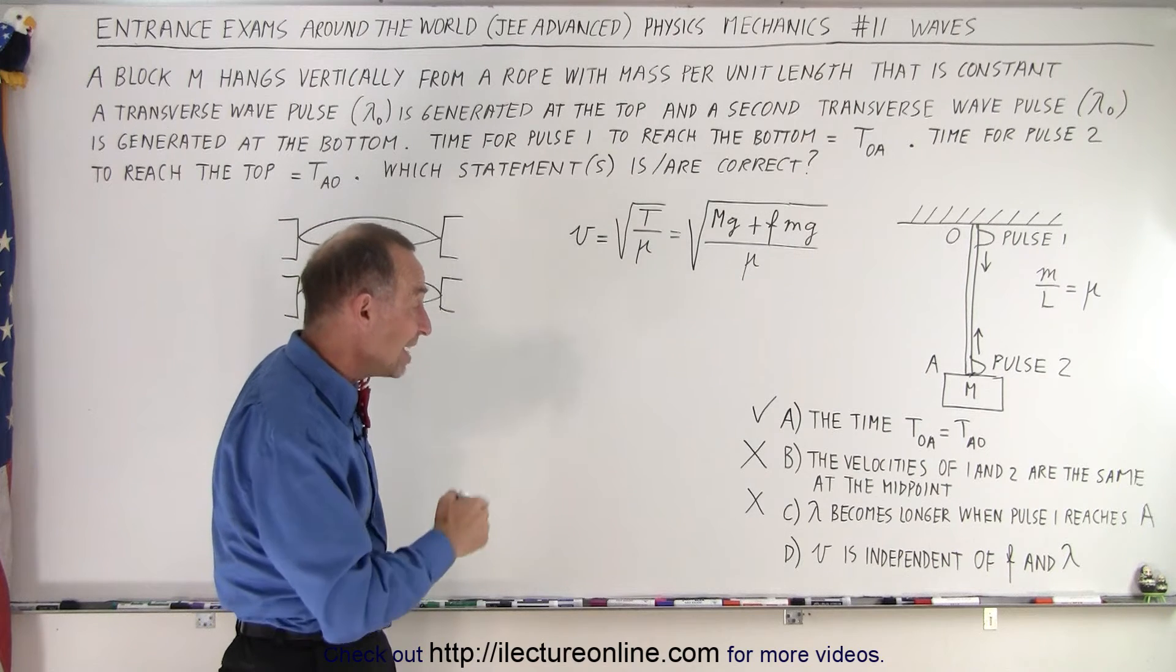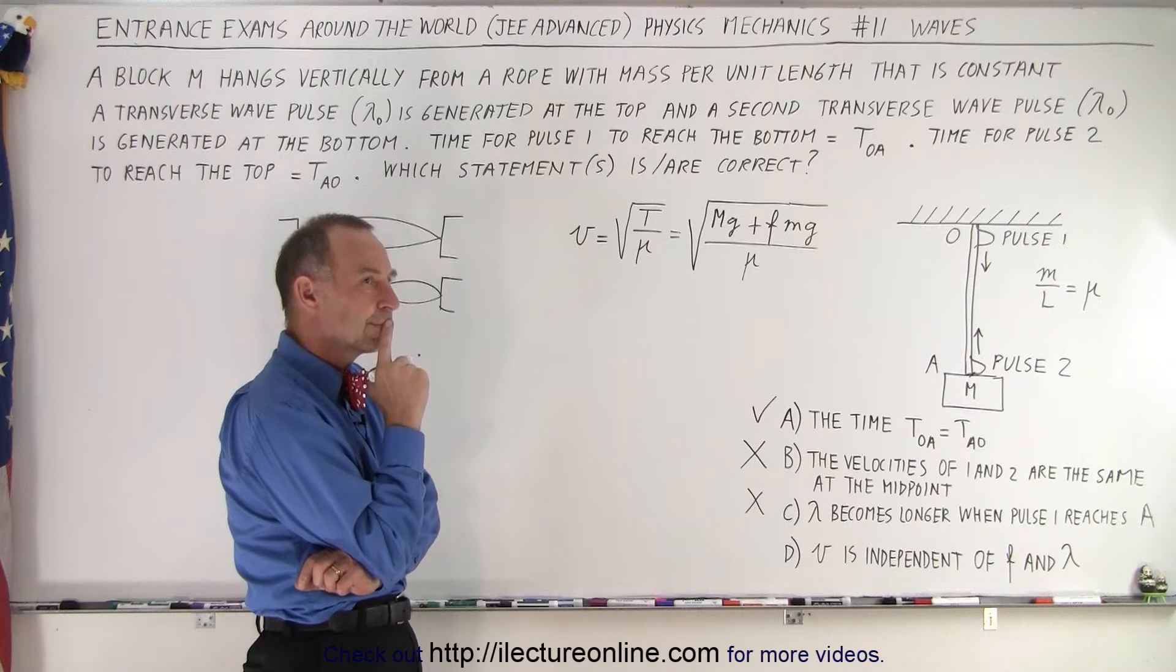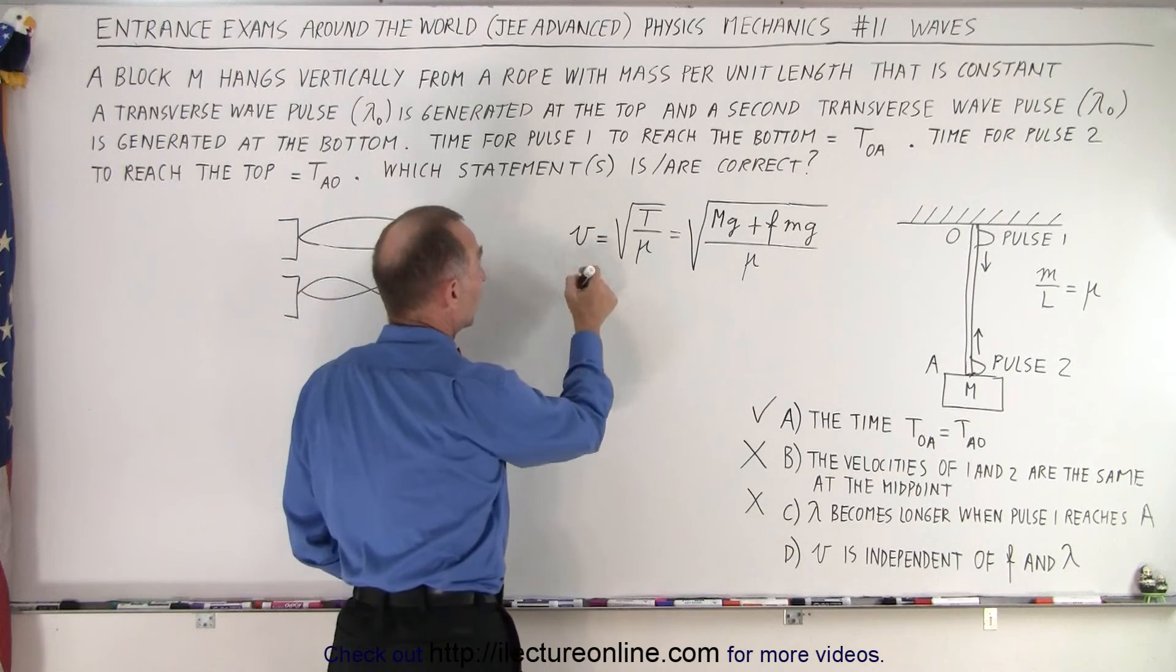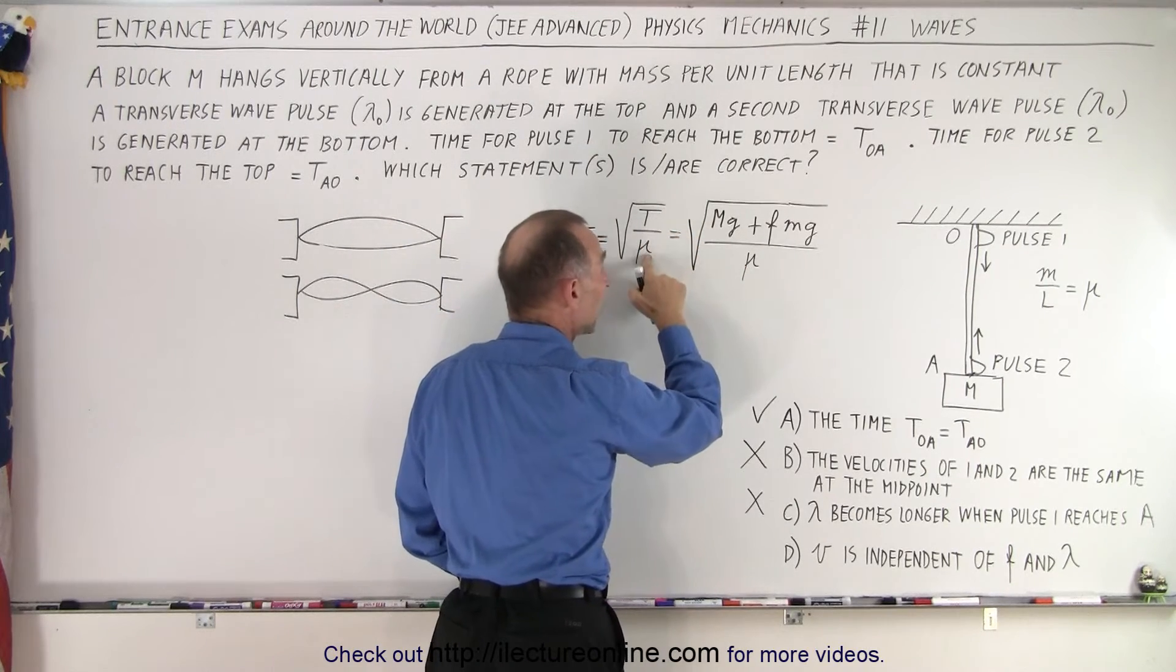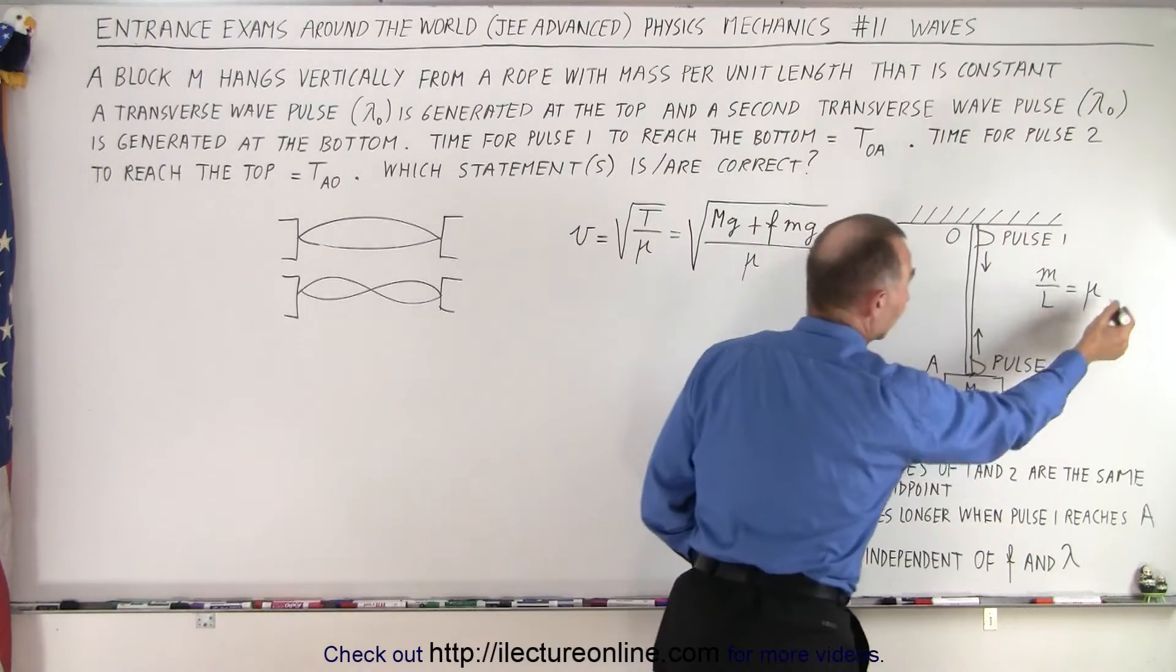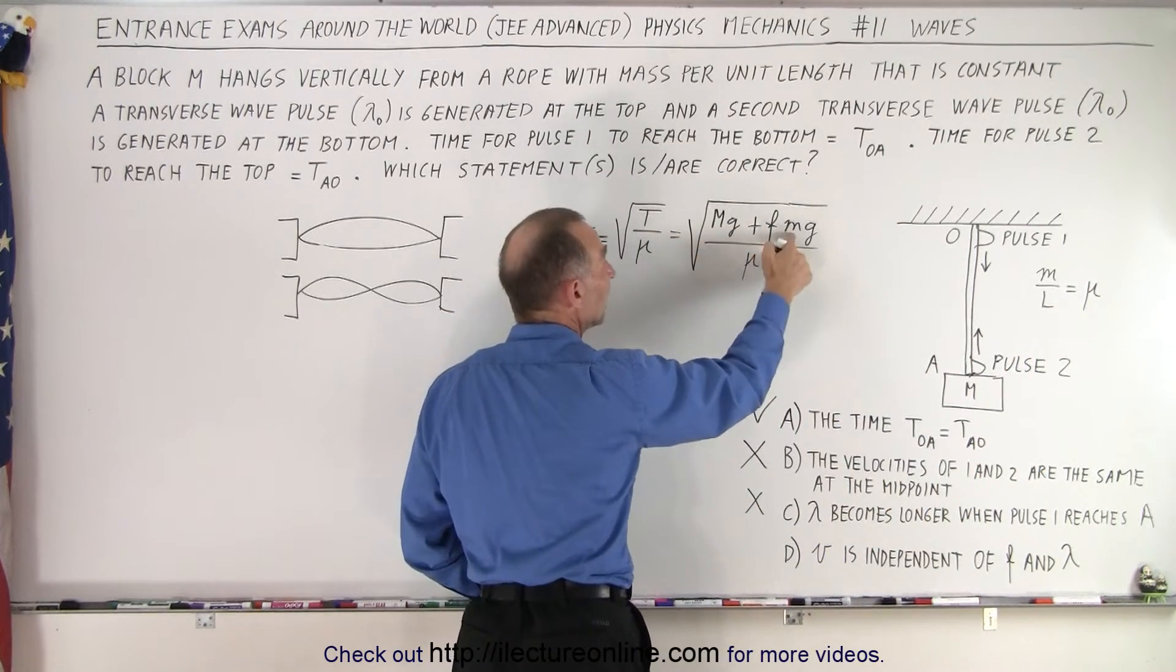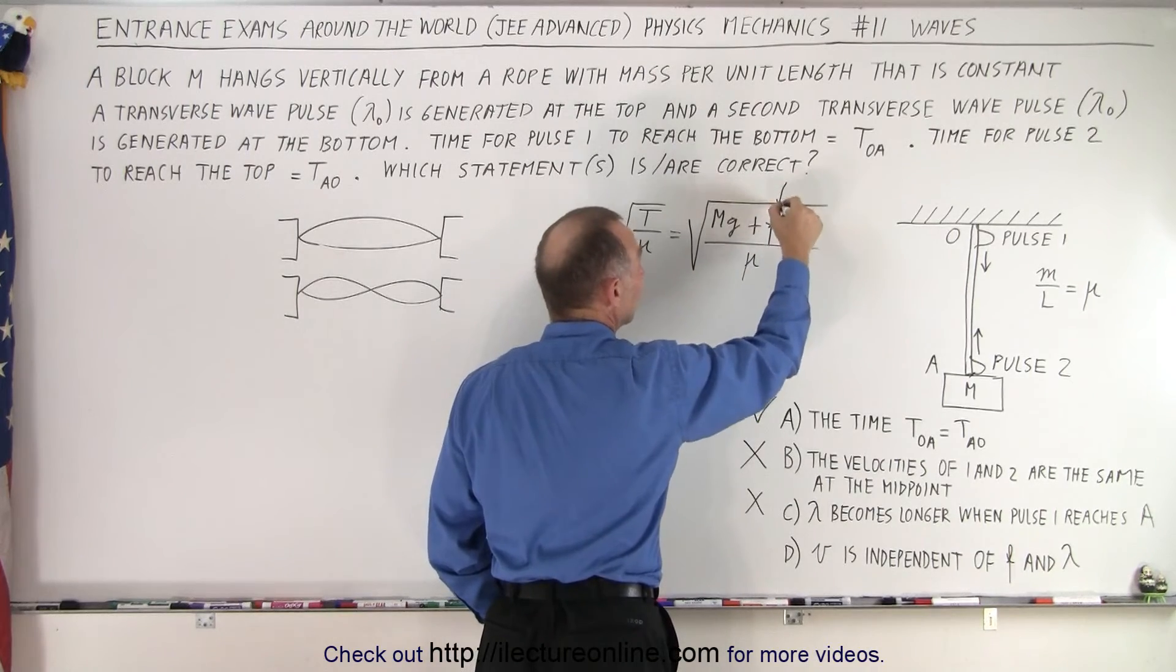Last question: V is independent of the frequency and the wavelength. Is that a true statement? Well, take a look at the equation. V is a function of the tension divided by the mass per unit length. The mass per unit length is a constant. The tension, big Mg, is a constant. And here, M_rope times g, that's a constant. The only thing that changes is f. F will change as the wave goes down.